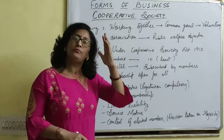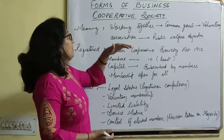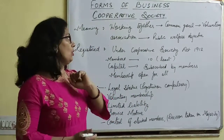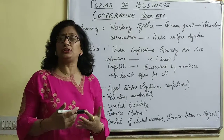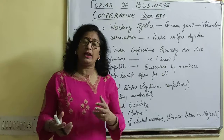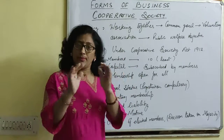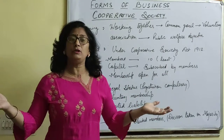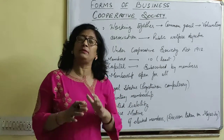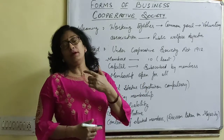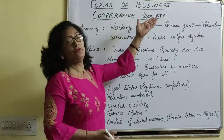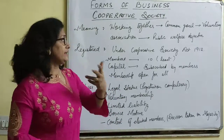Any kind of business that is established by members with a common goal, where there is cooperation — this is a voluntary association. It is a kind of business where a number of people, more than 10, join together with a common goal, and capital subscription is done by these people with the intention of providing welfare services to the public. This is called cooperative society.